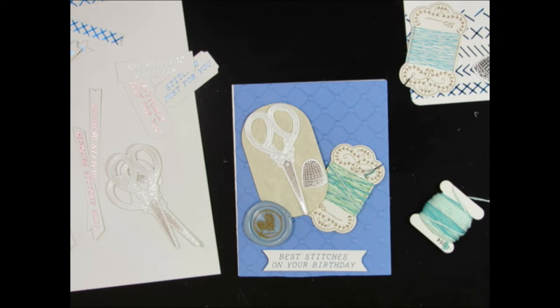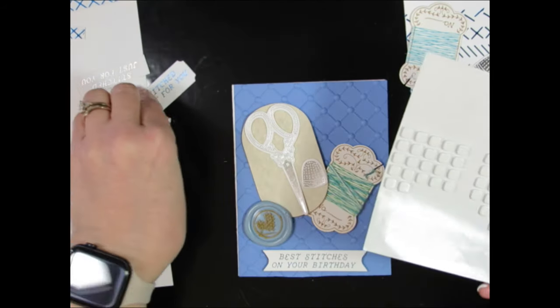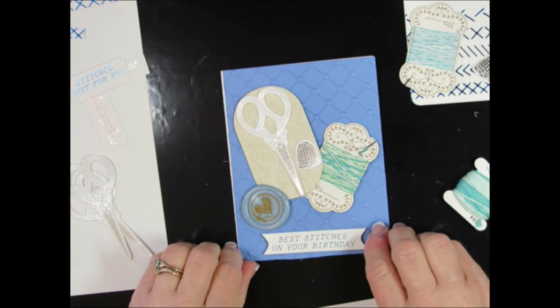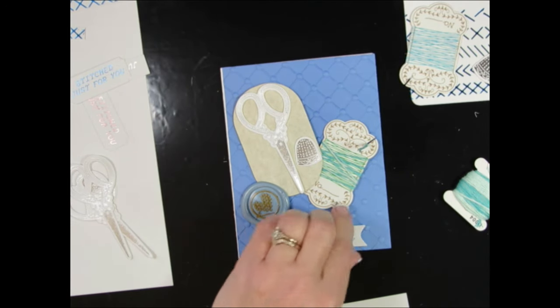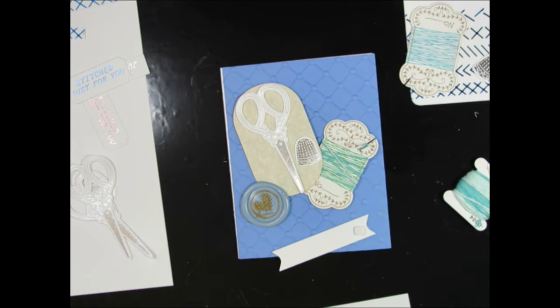And I'm going to just go ahead and adhere everything to this embossing folder. This is the Classic embossing folder, which was the 3D Embossing Folder of the Month for last month, March. So for my sentiment, I'm going to go ahead and use some of the Spellbinders small square foam.